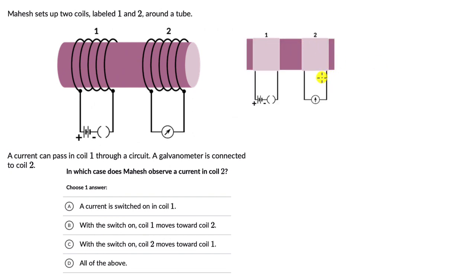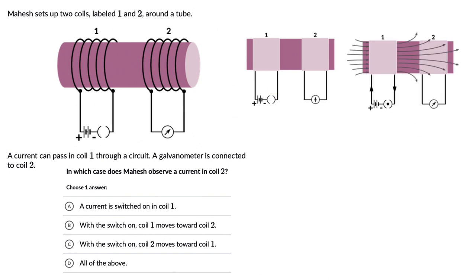The first situation is: a current is switched on in coil one. When there is a current flowing in coil one, there will be a magnetic field — a current-carrying coil generates a magnetic field. These magnetic field lines pass through the turns in coil two, which means the magnetic flux through coil two is changing. We know that changing magnetic flux induces current, so there will be a current in coil two in the first situation.